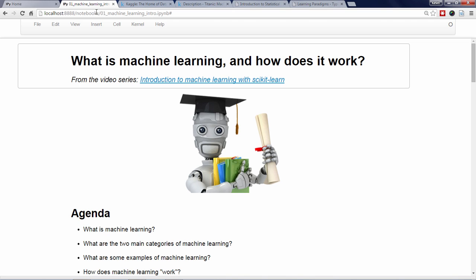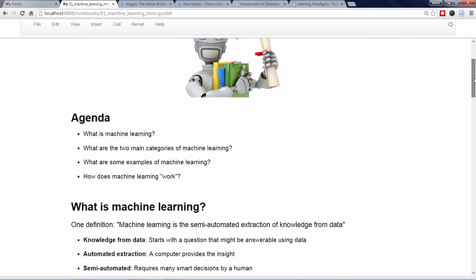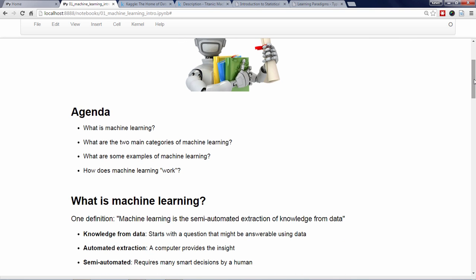So, what exactly is machine learning? There's no universal definition, but at a high level, I would define machine learning as the semi-automated extraction of knowledge from data. Let's break that down into three component parts. First, machine learning always starts with data, and your goal is to extract knowledge or insight from that data.